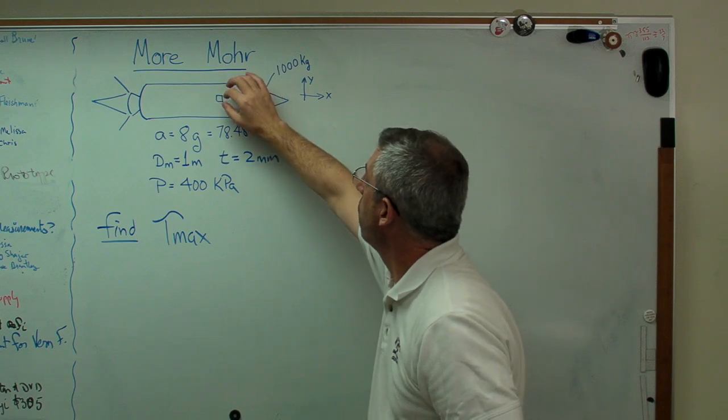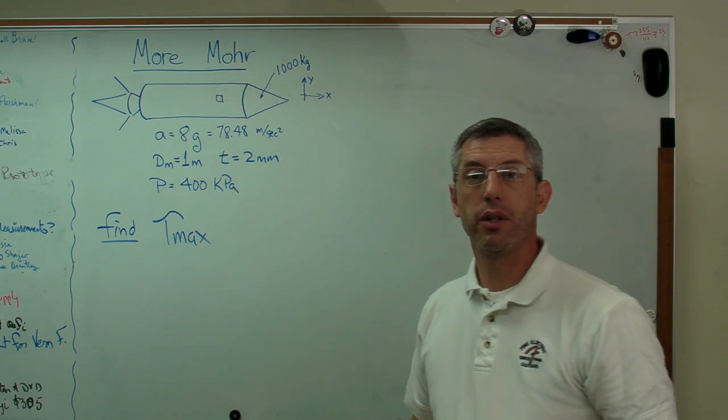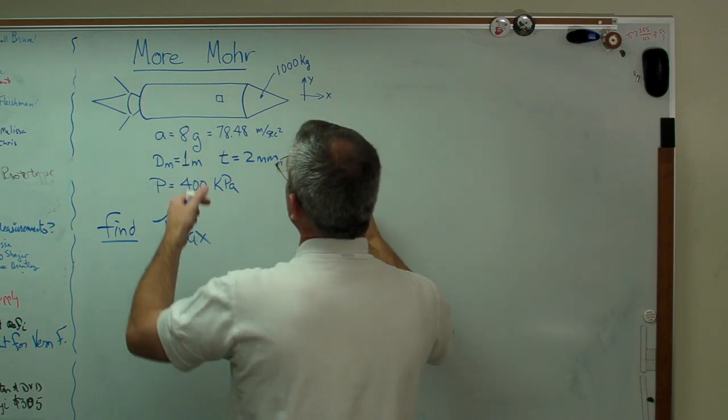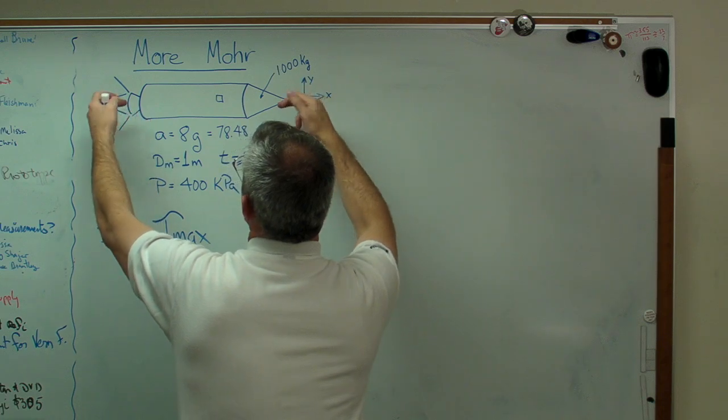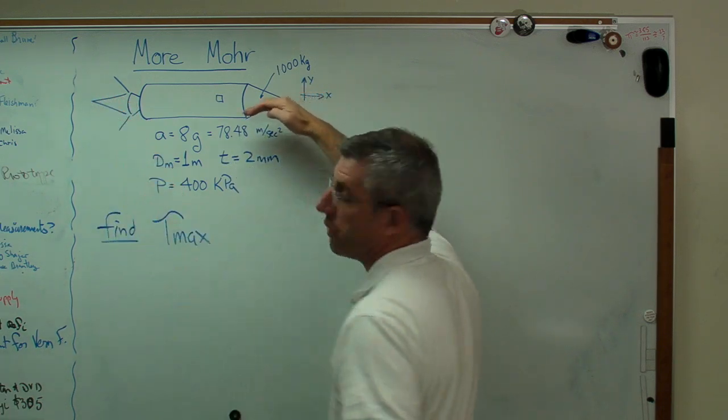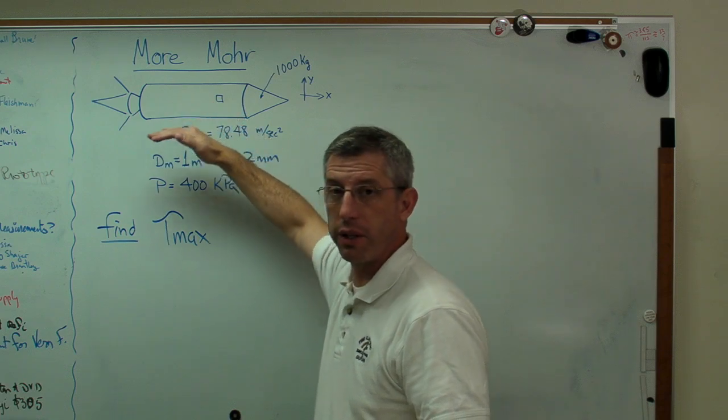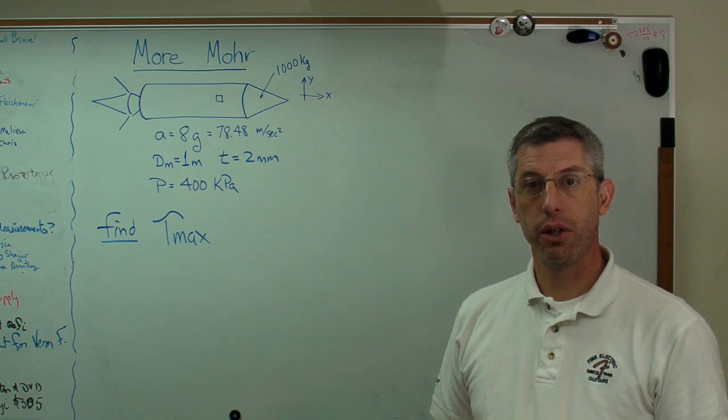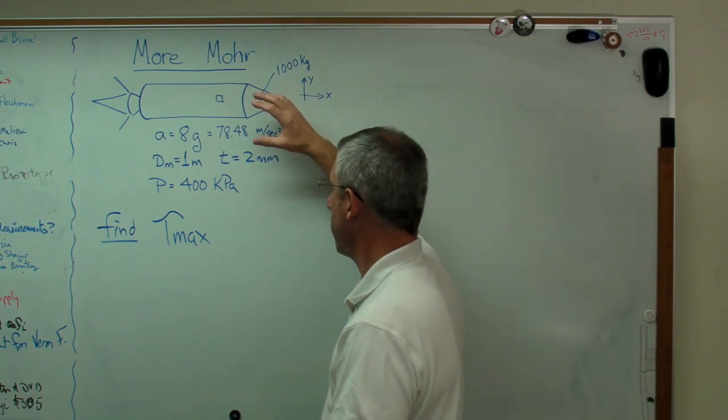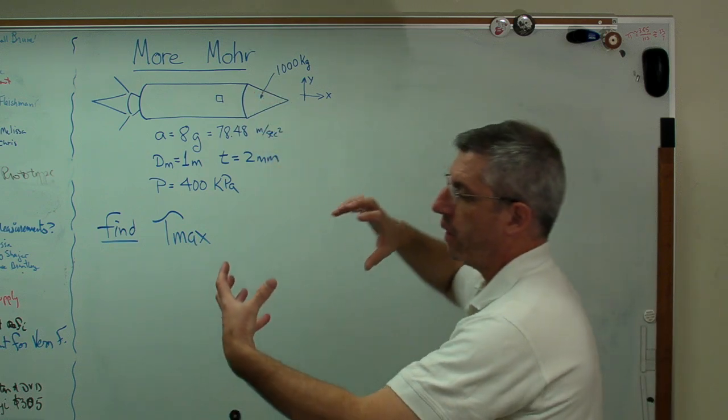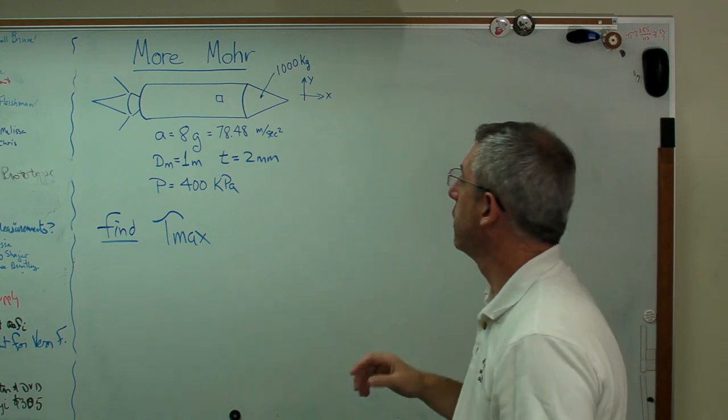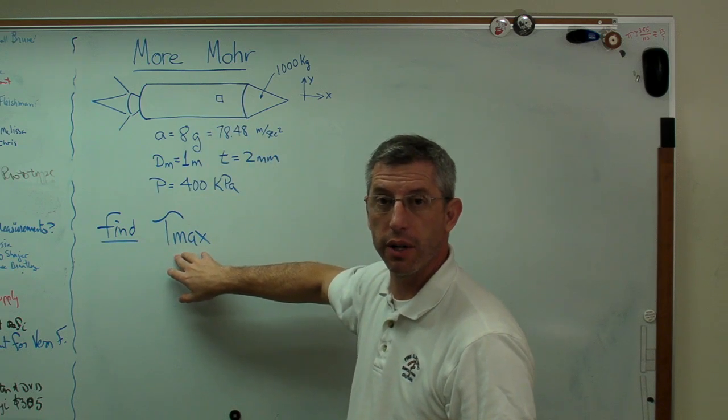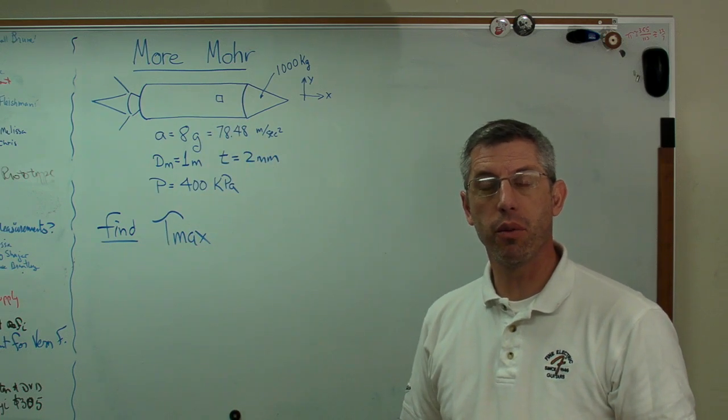The stress in the y direction is the hoop stress. The stress in the x direction is the longitudinal stress, which is tensile, plus the compressive stress due to acceleration. There's no externally created shear stress. No external force is trying to twist the rocket. So there's no tau xy. That doesn't mean there's no shear stress. This is the big idea behind Mohr's Circle.